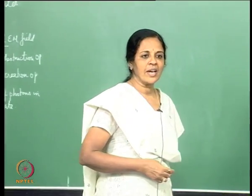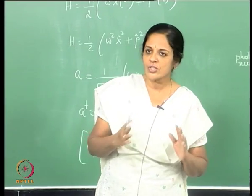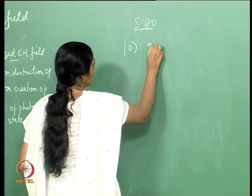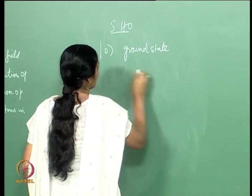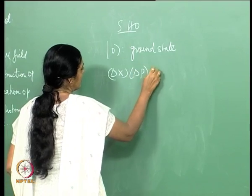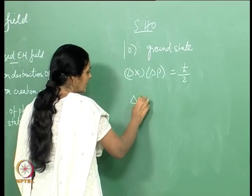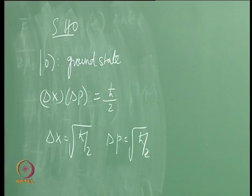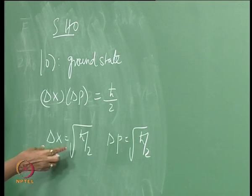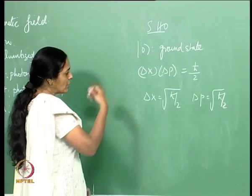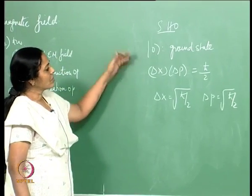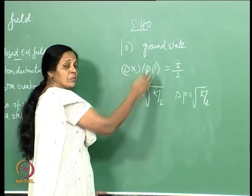When I discussed the harmonic oscillator, I showed that the ground state was a minimum uncertainty state. In the case of the simple harmonic oscillator, the ground state satisfies delta x times delta p equals h-cross over 2. Moreover, delta x equals root of h-cross over 2 and delta p equals root of h-cross over 2. With m equals 1 and omega equals 1, it was not only a minimum uncertainty state but one where delta x equals delta p. The general uncertainty relation gives delta x delta p greater than or equal to h-cross over 2, and for excited states of the oscillator the inequality holds.